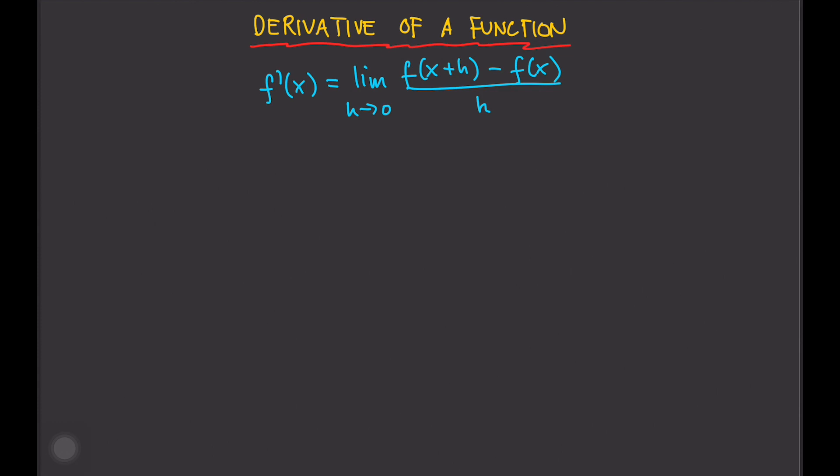That's the definition, and that's important because every time we solve the derivative, we're going to go back to that definition. So let's try one example: find the derivative of f of x equals 11x minus 5.